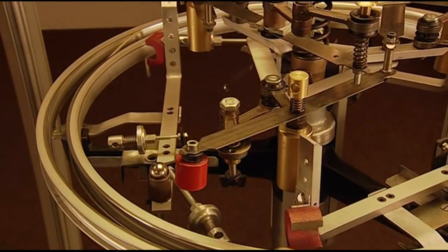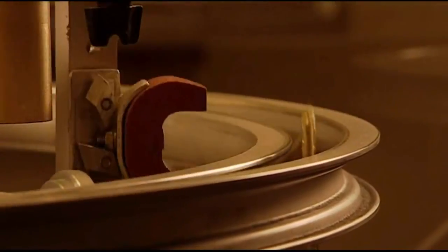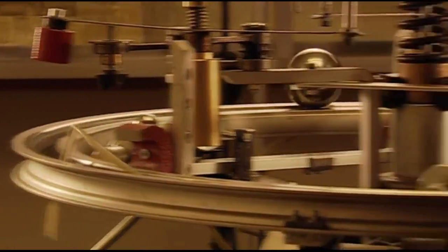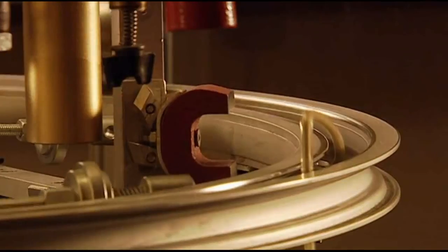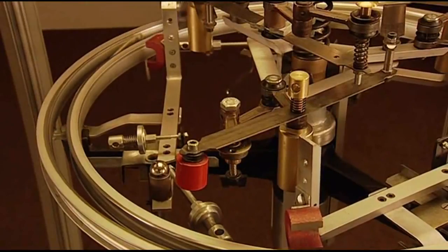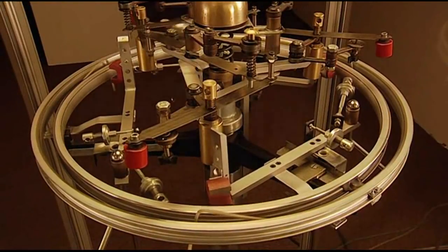When you consider that the internal combustion engine is only 30 percent efficient, 99 percent is an extraordinary score. But only at 100 percent can this machine qualify as perpetual motion. At 101 percent, it can be said to produce surplus and therefore free energy.